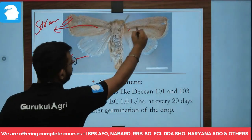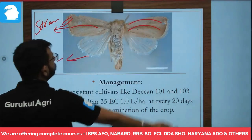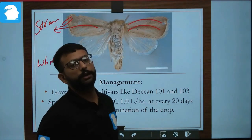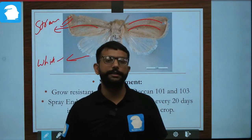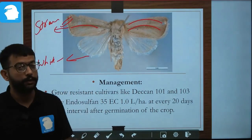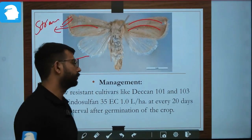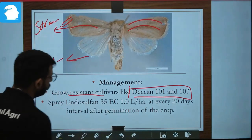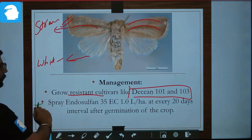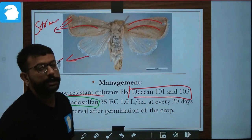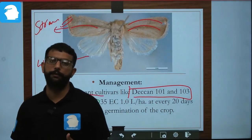For management, we can use resistant varieties — Deccan 101 and Deccan 103. These are the most important varieties you need to memorize. We can also spray endosulfan, which is the most common chemical method adopted for control.